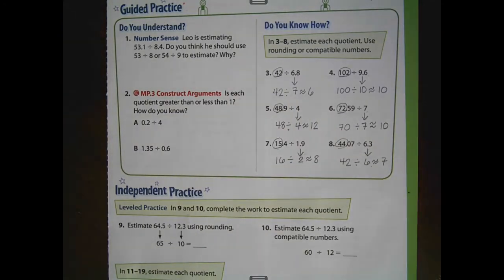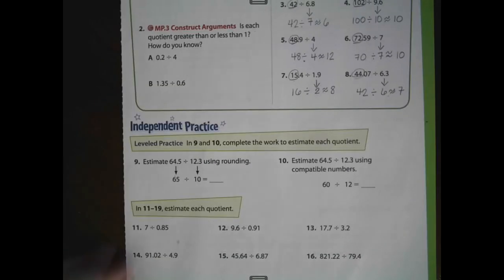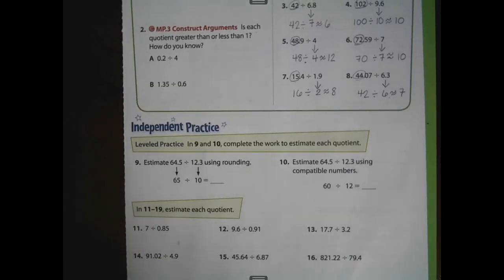So we could use different sets of numbers to round, or we could use different pairs of compatible numbers. But no matter what we're using, our estimated quotients should be very close to one another. For numbers 9 and 10, let's take a look at these. They've kind of given us a little bit of a problem starter.